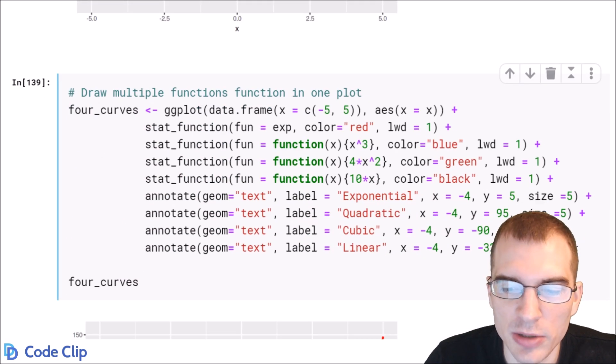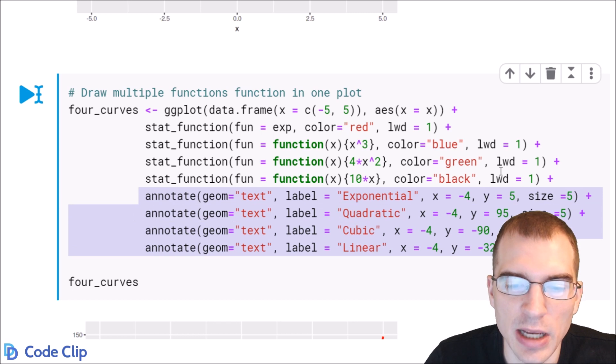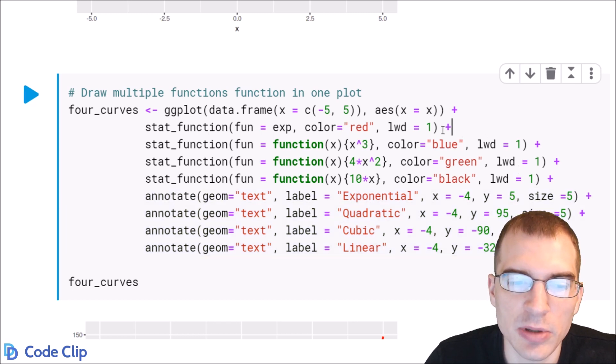You don't have to worry too much about all this text formatting. That's just adding text to the plot. But basically what we're doing is the same thing as above. We're making a data frame on the range negative 5 to 5. But this time we're going to add four different lines to it.